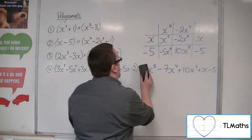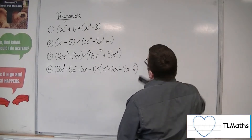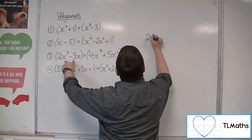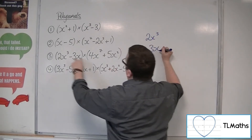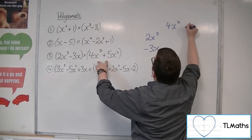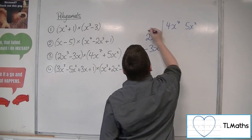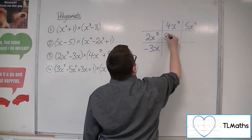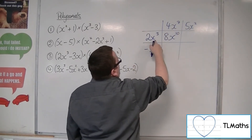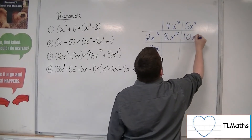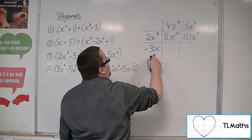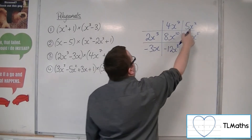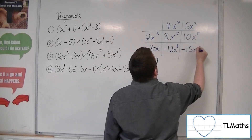Usually a grid can often be quicker and you don't lose any terms as well. For number 3, we've got 2x cubed and minus 3x, multiplied by 4x to the 7 and 5x squared. 2x cubed times 4x to the 7 is 8x to the 10. 2x cubed times 5x squared is 10x to the 5. 4x to the 7 times minus 3x is minus 12x to the 8.